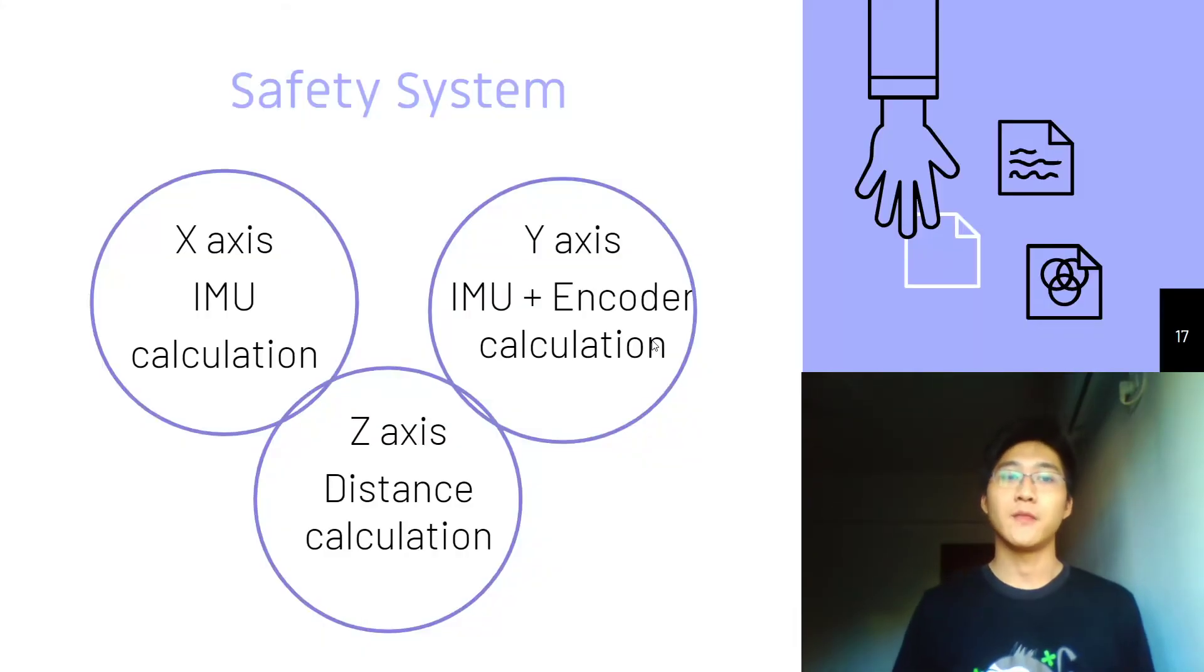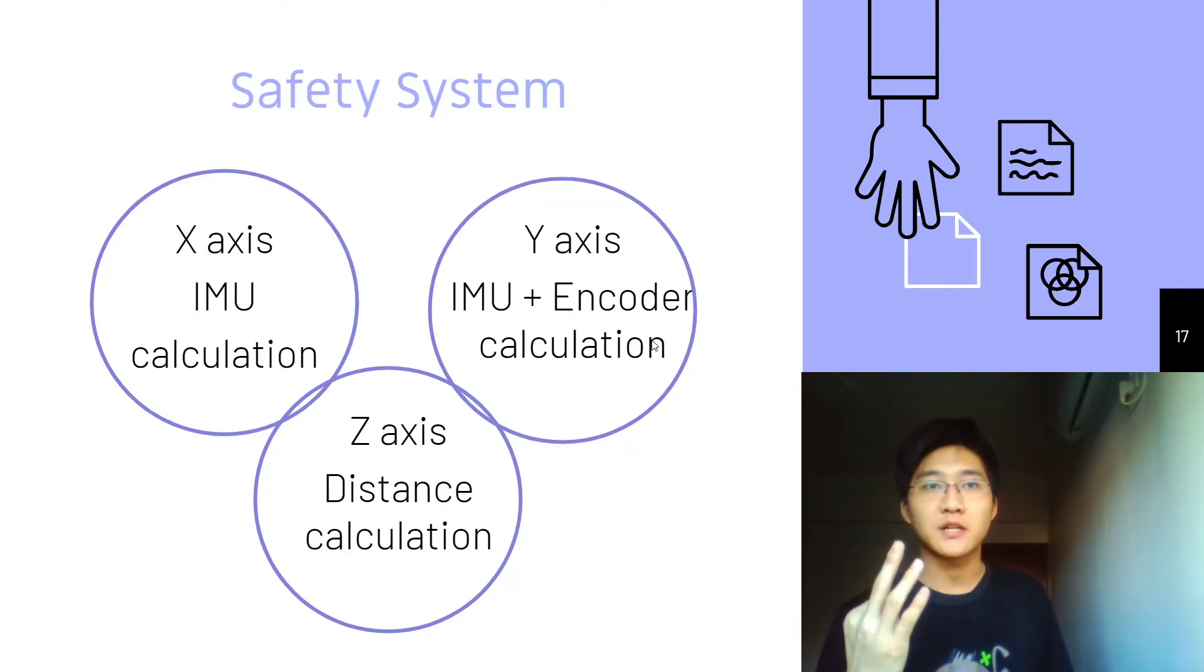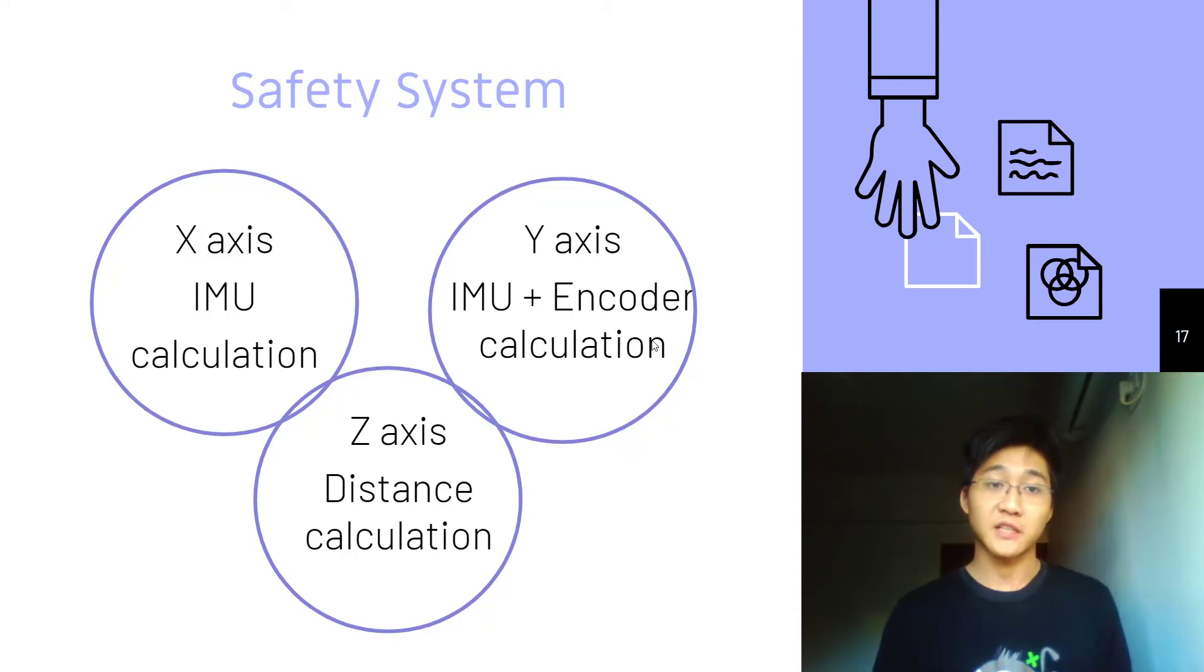And then the safety system. In the safety system, we use three kinds of sensors to provide safety guarantee. For X-axis, we have IMU calculation. For Y-axis, we will have IMU and encoder. The calculation gives us a comparison. If there is a big conflict, then we will pause the movement. And that is the Z-axis. The distance sensor will feedback the distance from the ground. If we detect that the device is not on the firm ground, then we will not start moving.